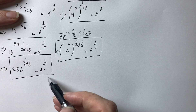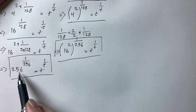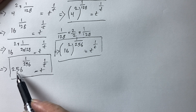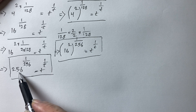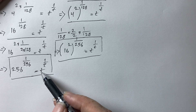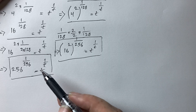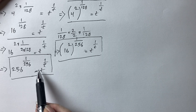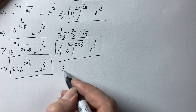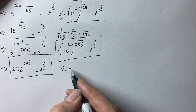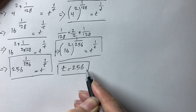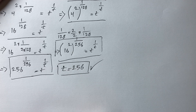Look carefully. Comparing left hand side and right hand side: the left hand side is 256 to the power of 1 over 256, and the right hand side is t to the power of 1 over t. Both sides now have the form of a number to the power of 1 over that number. So comparing the two sides, t equals 256. And this is our final answer.